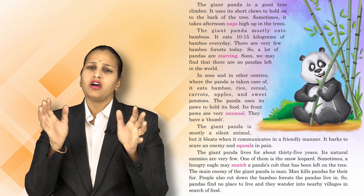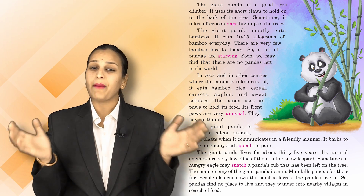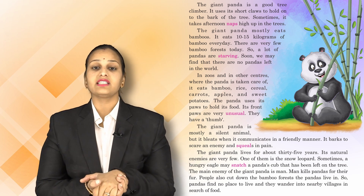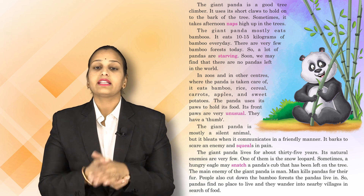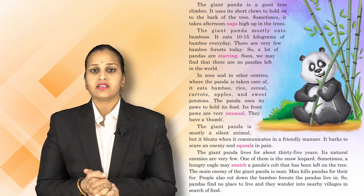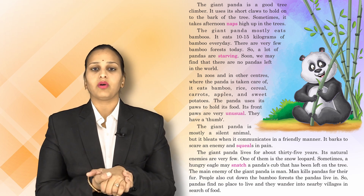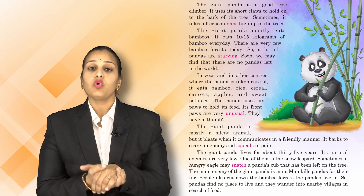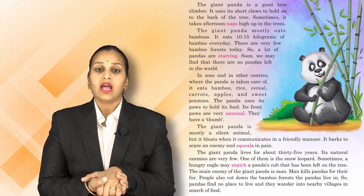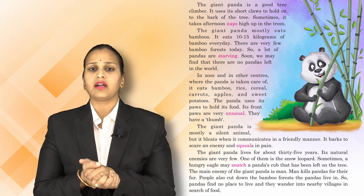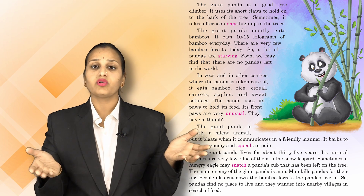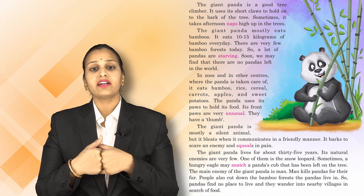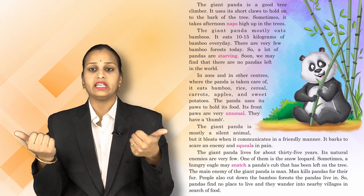We always cut trees and bamboo, so pandas are becoming very few. Pandas are found mostly in mountain regions — in China and Tibet. In India, it is too hot and humid, so pandas cannot live there. Because people cut bamboo trees, pandas have nothing to eat, and they are dying one by one.